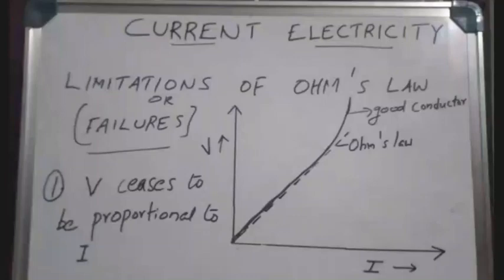Let's talk about the limitations and failures of Ohm's Law. Ohm's Law is not universal. It is a basic law, not a universal law. That is why the limitations of Ohm's Law will be taught. V ceases to be proportional to I — the proportionality of Ohm's Law is not universal.